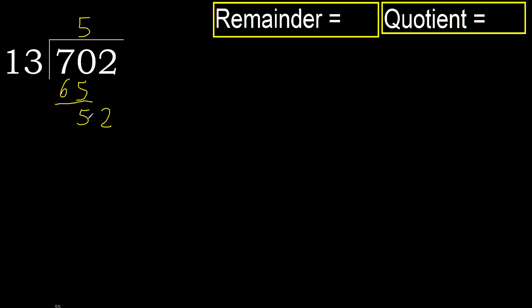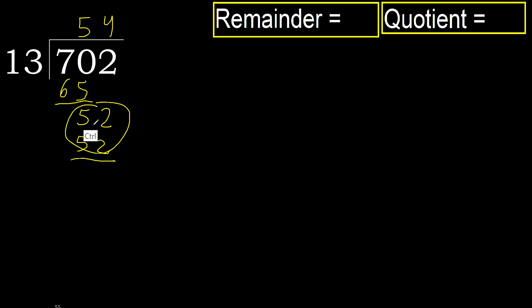52. 13 multiplied by 5 is greater, multiply by 4 — 52 is not greater, okay subtract.